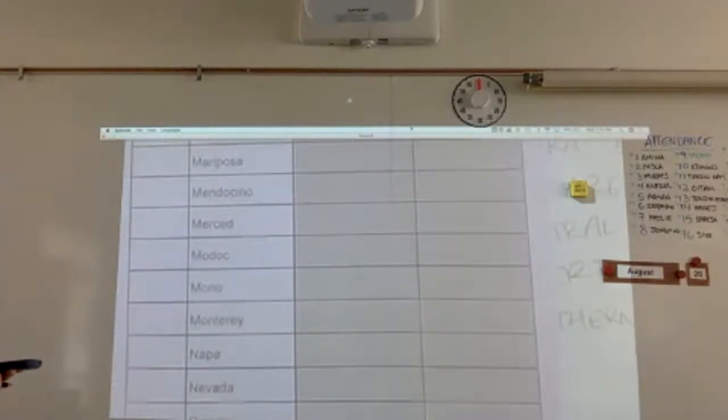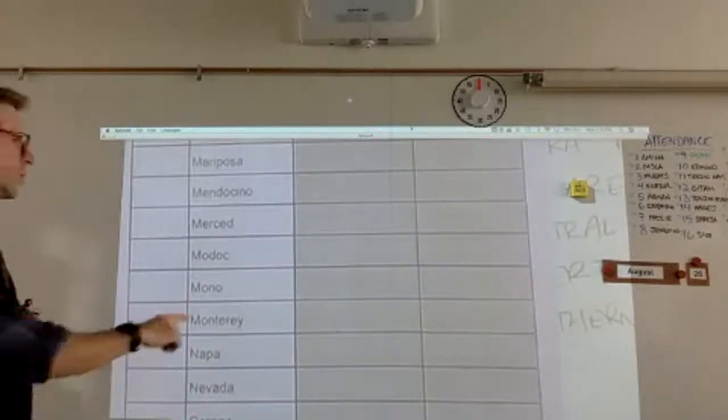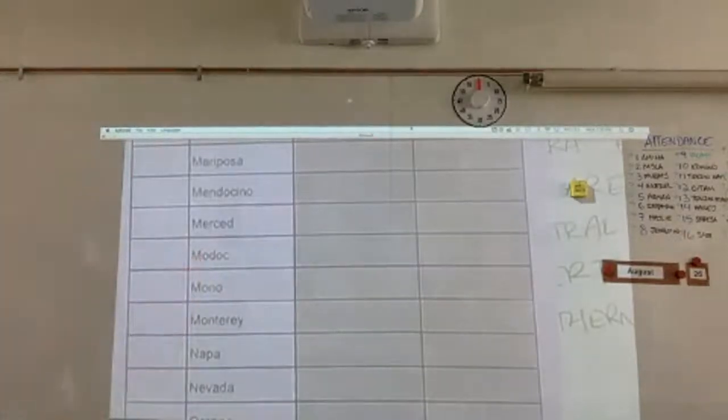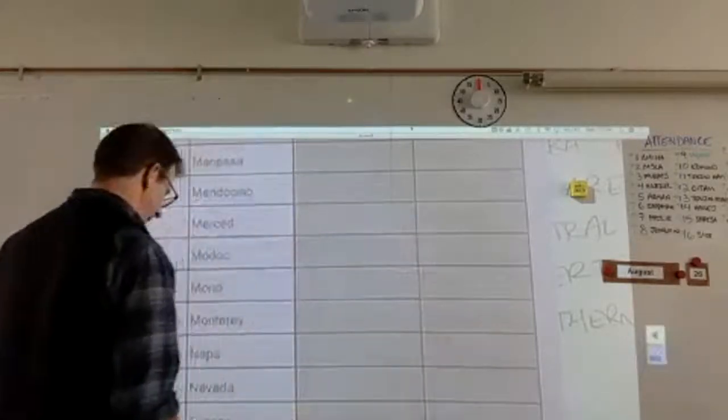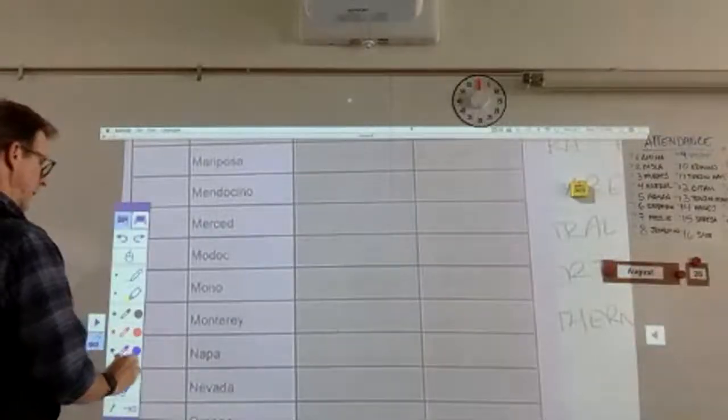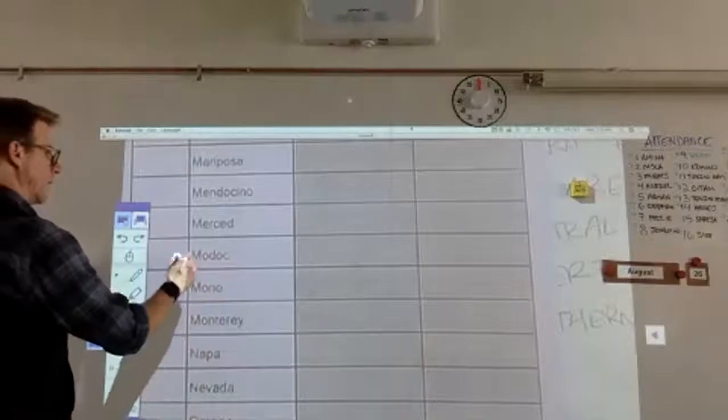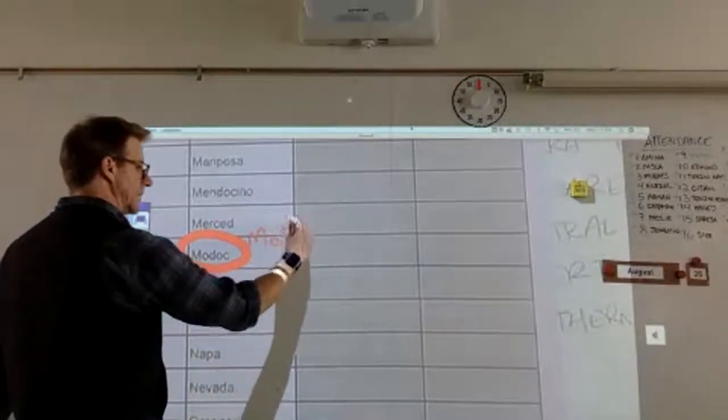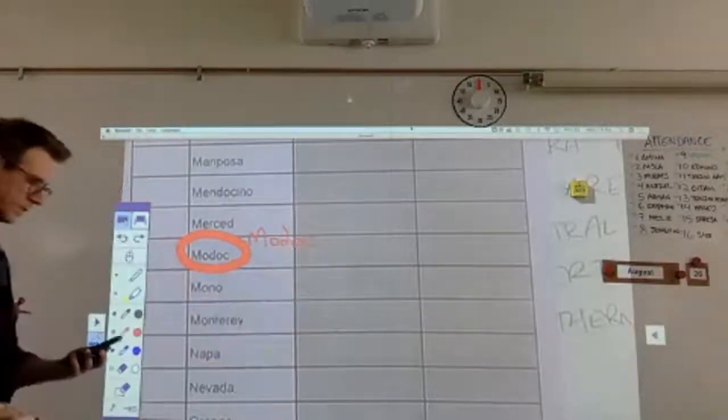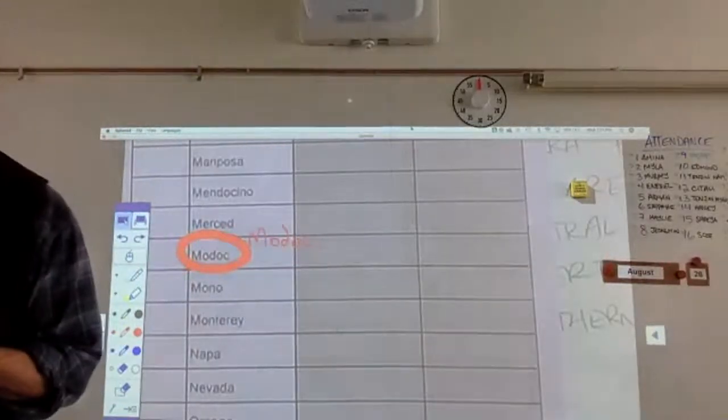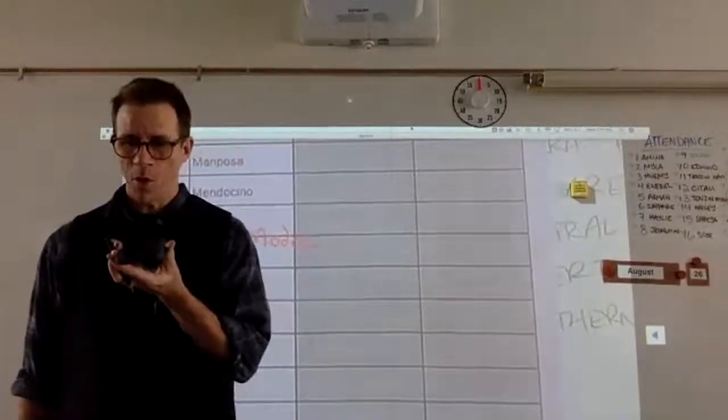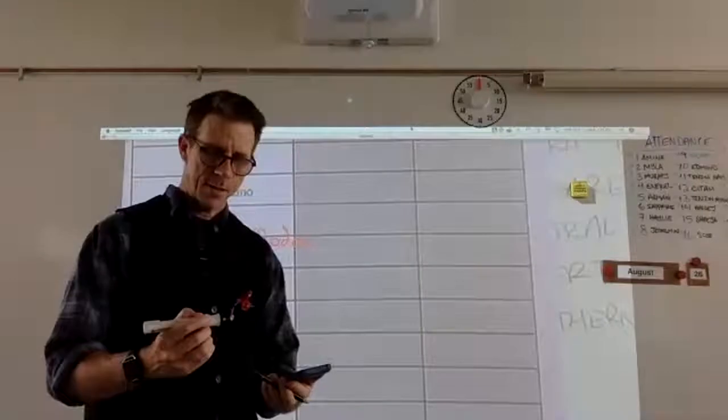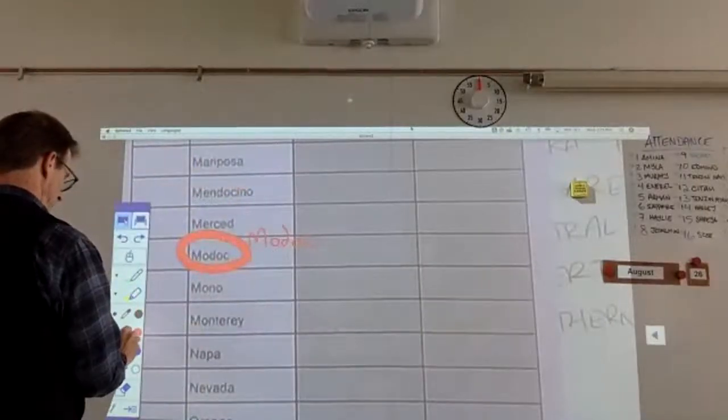If you can't see it, this says Modoc. So, M-O-D-O-C. And then, according to Siri, hey, Siri, how many people live in Modoc County? In 2019, the population of Modoc County was 8,841.